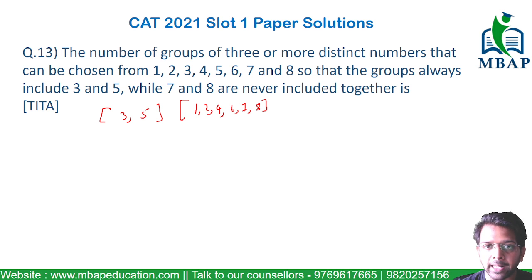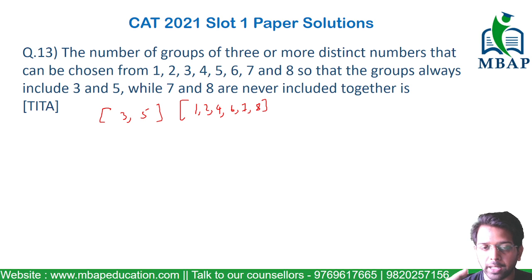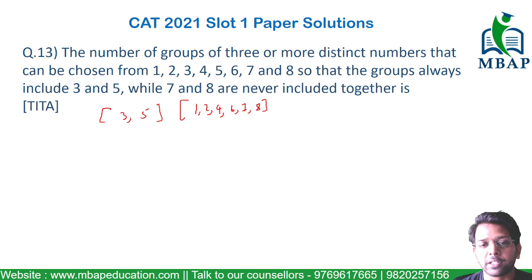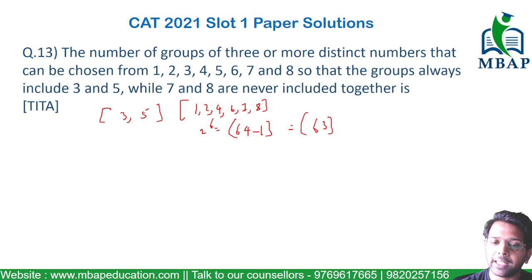I can choose at least one or a maximum of all six together. Can I choose zero? No, because we want a minimum set of three, and 3 and 5 have already been chosen. Out of the remaining six numbers, I have to choose at least one. If you have n objects and you have to select at least one, that is given by 2 raised to n minus 1, which removes the case where zero has been selected. So 2 raised to 6 equals 64, minus 1 gives 63 — the total ways to select 3, 5, and at least one of the remaining six numbers.